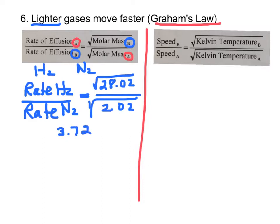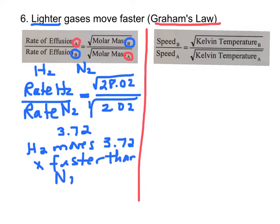Well, what does that mean? That means that at whatever temperature we're talking about, hydrogen moves, effuses, diffuses, whatever, 3.72 times faster than nitrogen. So we can not only decide who moves faster, but how much faster.